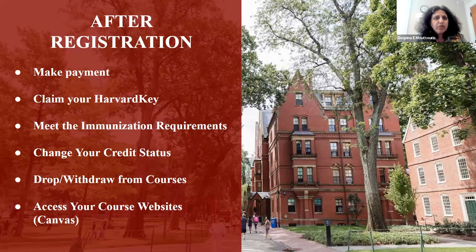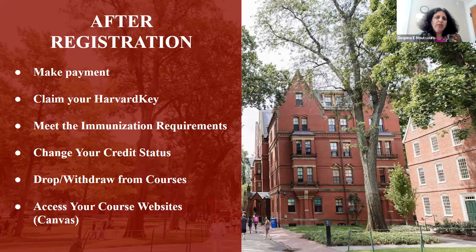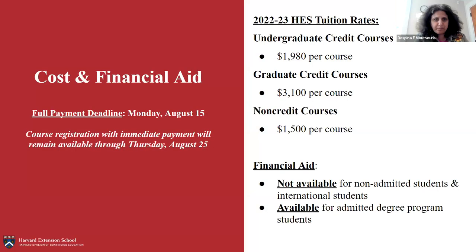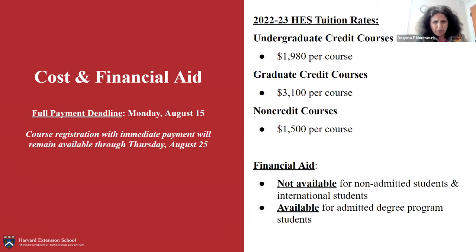Key steps after registration include making your payment, claiming your Harvard Key, meeting immunization requirements, potentially changing your credit status, dropping or withdrawing from courses if needed, and accessing your course websites in Canvas. The full payment deadline for the fall semester is Monday, August 15th. Course registration remains available from August 16th through August 25th, but during that window you must make immediate payment on the same day you register, or your course will be dropped for non-payment.